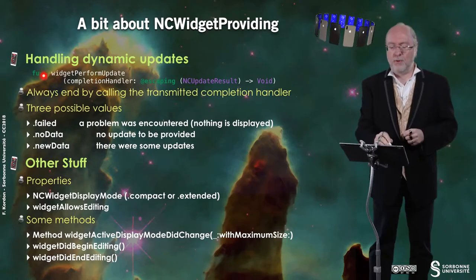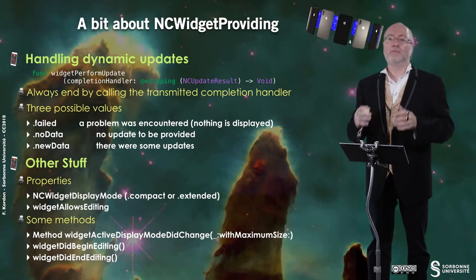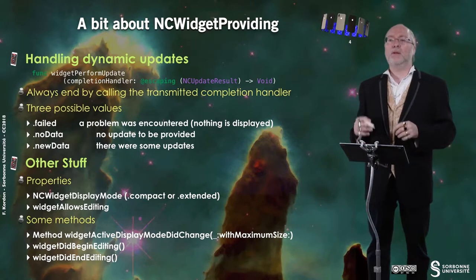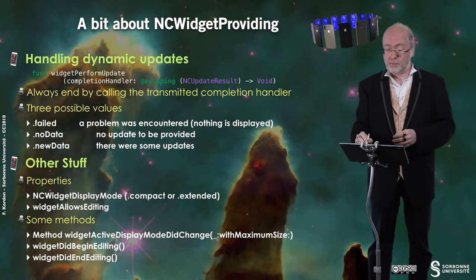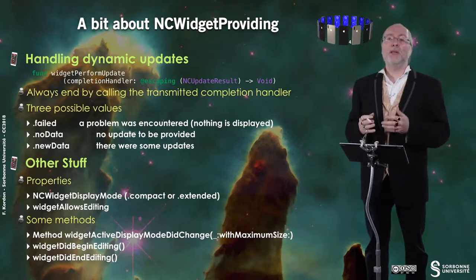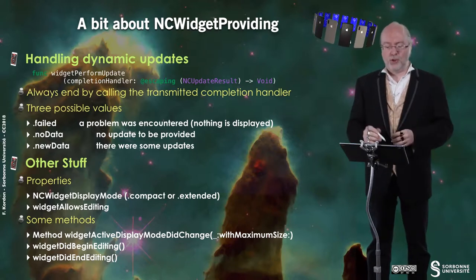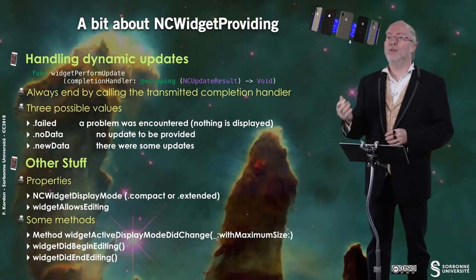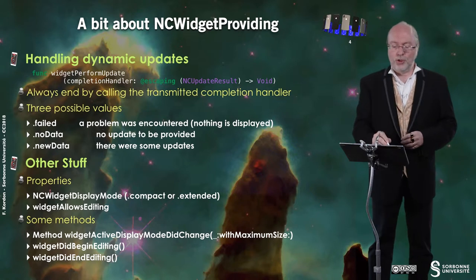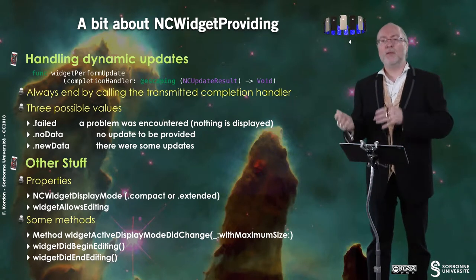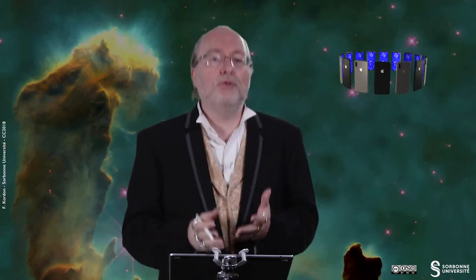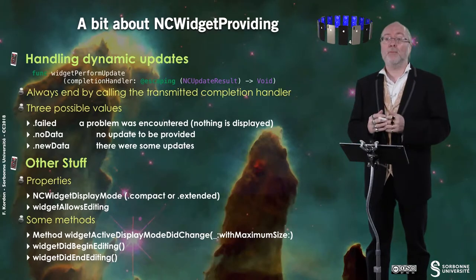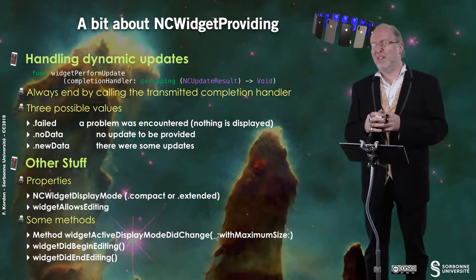You have one main method: widgetPerformUpdate. It's invoked, and then you get as a parameter a completion handler that you have to invoke at the end, because you have to give back execution to the operating system by providing it some information. Typically, you provide an execution value. The first value is 'failed' — it means you have a problem and nothing will be displayed. You can also provide 'no data', and then iOS will say it already displayed it, so it's okay. You can also tell it you have new data and it will perform an update. It's very important to invoke this handler — otherwise it probably crashes.